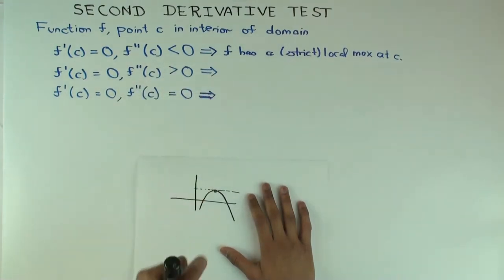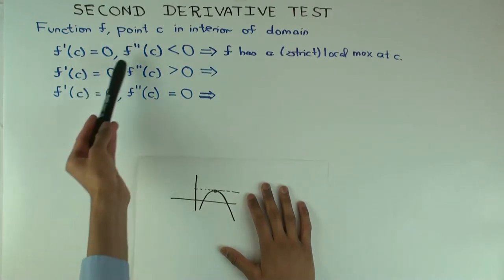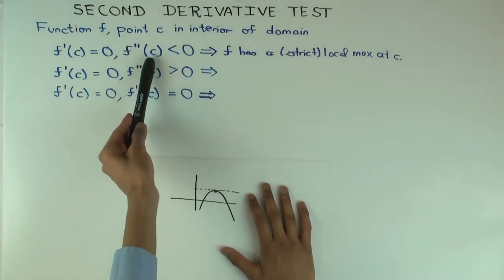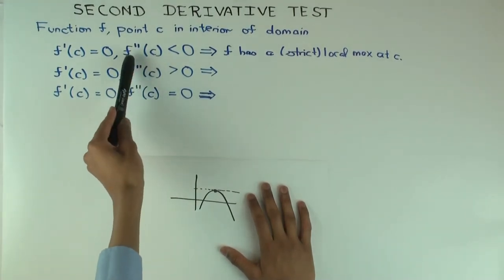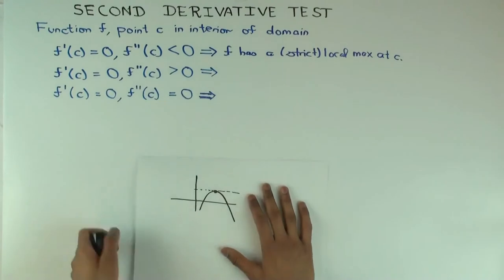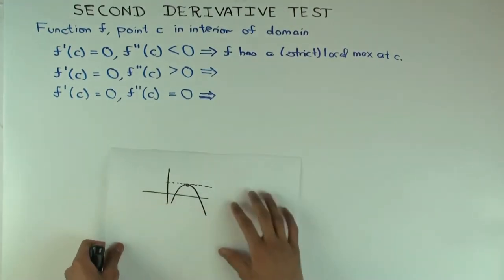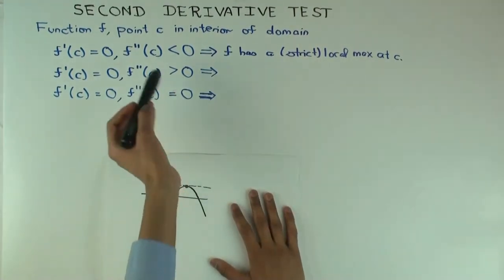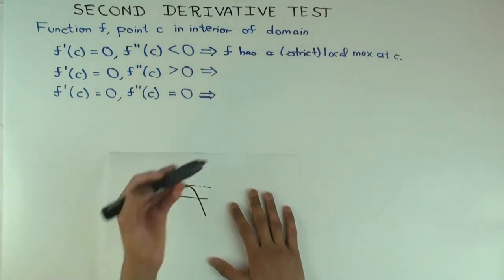Does it have to be differentiable on the left or right of c? Does it have to be once differentiable on the left or right of c? Yes. Because that's the only way you can take the second derivative at c. To take the second derivative at c, you need the first derivative to be defined around c. So, this is the typical situation for f double prime c less than 0. That's where it gets to the local max.